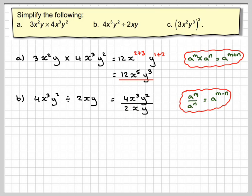So 4 divided by 2 is 2. Here we're going to have x to the 3 take away the power of this one, which is 1. So x to the 3 take away 1. Here we're going to have y to the power of 2 take away 1.